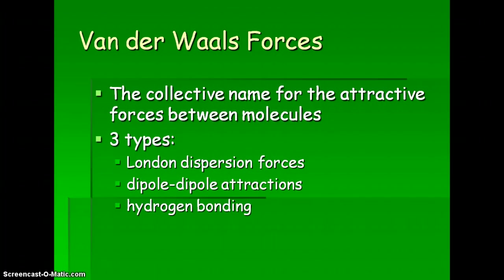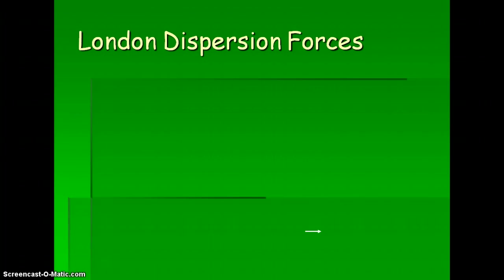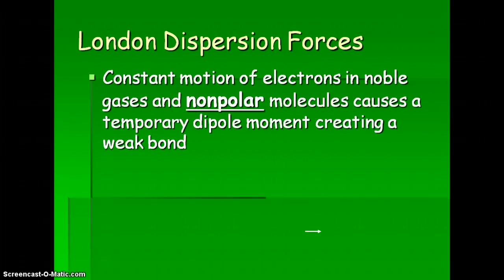We'll start with London dispersion forces. There is constant motion of electrons in noble gases and in non-polar molecules, and this causes what we call a temporary dipole moment, creating a weak bond. Because the electrons are moving around, when there are more electrons in one location, that area will be more negative, and where they don't exist will be more positive. That's why we call it temporary — because they're constantly moving and that is changing.